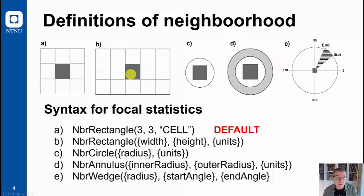These are typically the kinds of neighborhoods you are using in focal based map algebra, but very often it is the three by three window which is used.